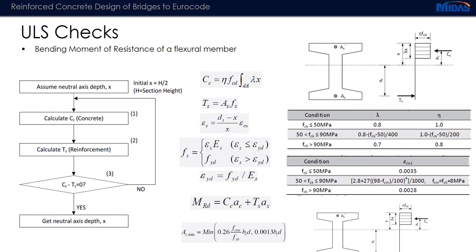Now let's look at ULS checks — how bending moment resistance and shear-torsion are calculated. Bending moment resistance is calculated using a strain compatibility approach: a neutral axis depth is assumed, the concrete strain is taken at its upper limit of 0.0035, reinforcement strain is calculated from the neutral axis depth, and the total compressive and tensile forces are computed. If compression equals tension, the correct neutral axis depth has been found; otherwise the iteration is repeated. The design assumes an under-reinforced section and this entire iteration is done automatically by the software.